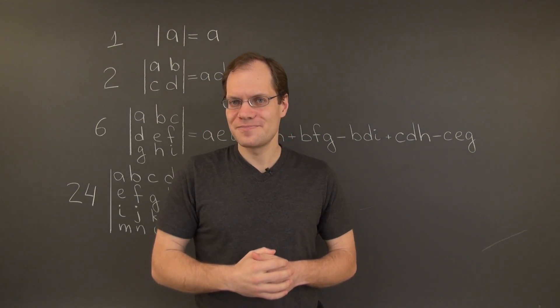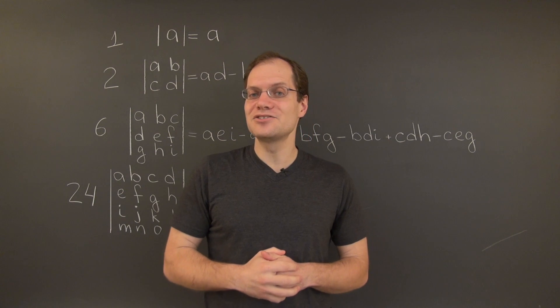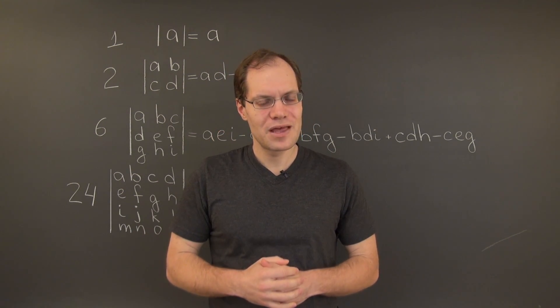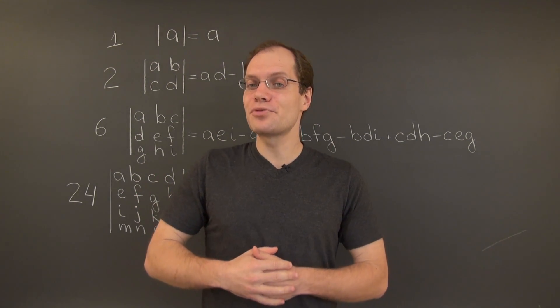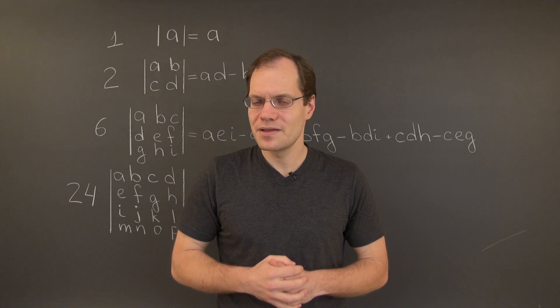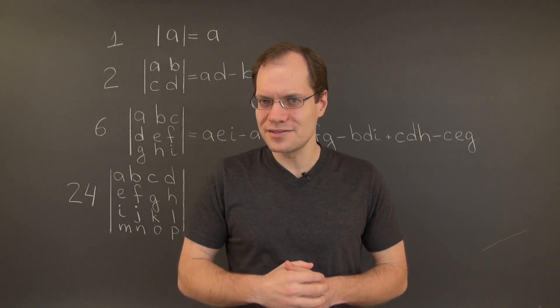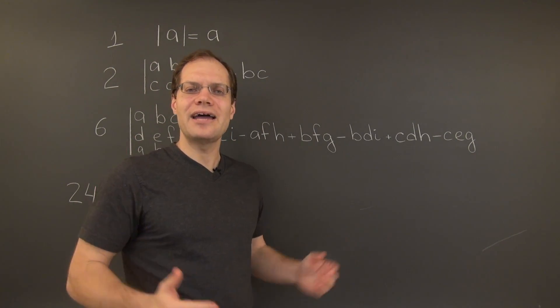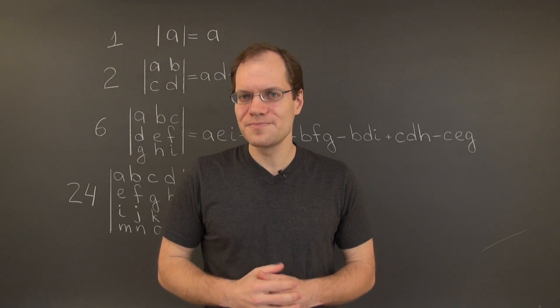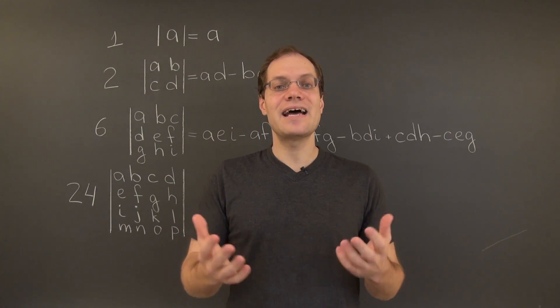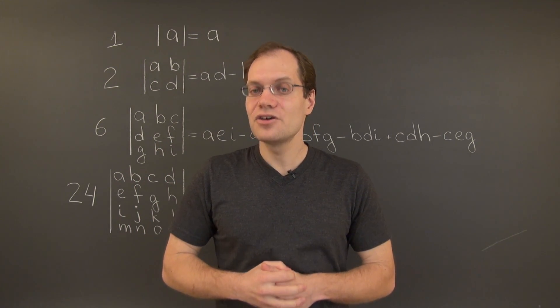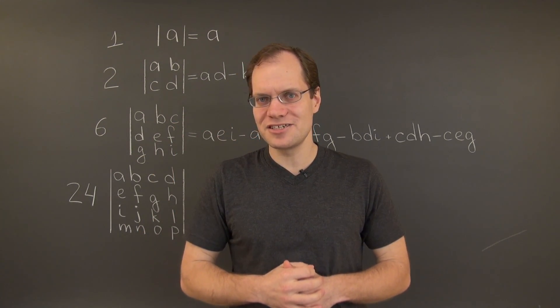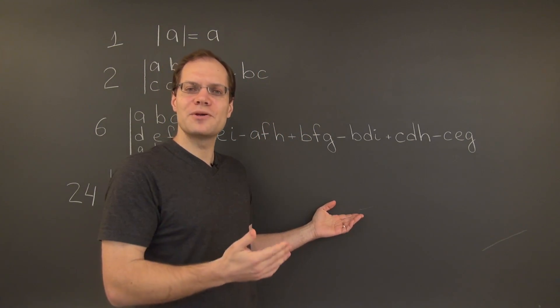And now, one final note. Many connoisseurs of linear algebra prefer to introduce determinants differently. What they like to do is to a priori specify the list of properties that the determinant should satisfy. And then they use those properties to show that the general formula with n factorial terms is inevitable. And that's a very attractive approach, and I myself like it very much. And that's the approach that Gil Strang uses in his videos. And in that approach, the properties of the determinant is the definition, and the general formula is the consequence.